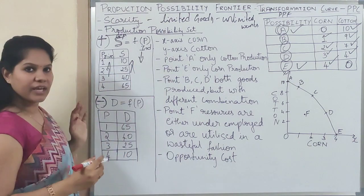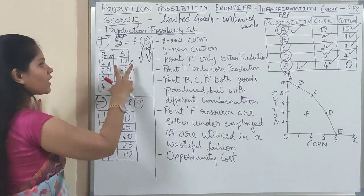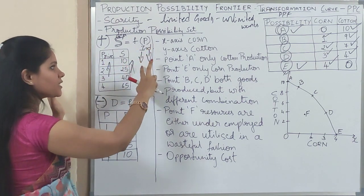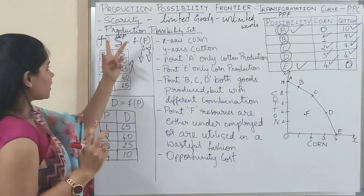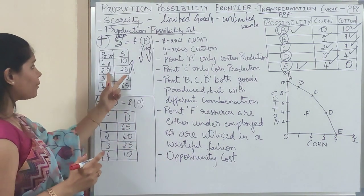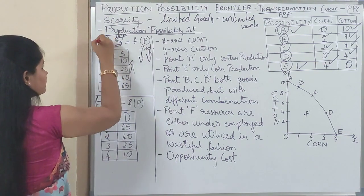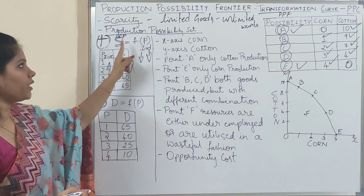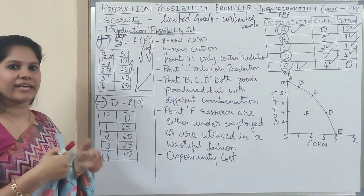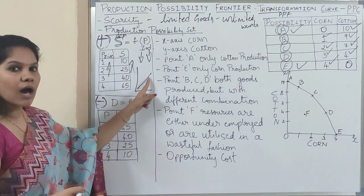Whenever you have a positive relationship, always the line goes upward — the curve will go upward. Now the second example: the relationship between the two variables is negative. Demand is a function of price. Price is again the independent variable; demand is the dependent variable. Price continuously increases — demand goes from 65, to 40, to 25, to 10 — it starts decreasing. So whenever price increases, demand decreases.